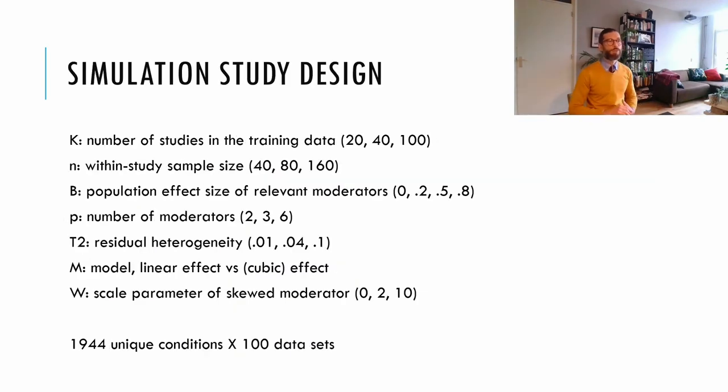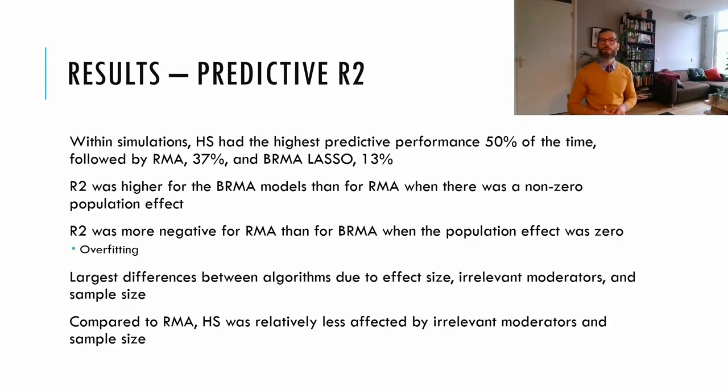Just to briefly summarize this simulation study, we manipulated several parameters. The combination of all of these design parameters created 1944 unique conditions, and for each condition we simulated 100 datasets. We compared several performance metrics, and the first one was the predictive R-square. That is, how well does the model predict effect sizes of a new dataset?